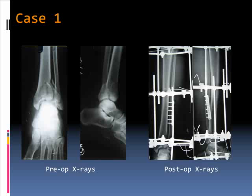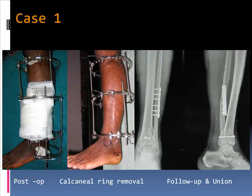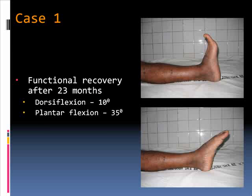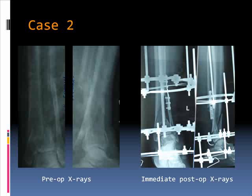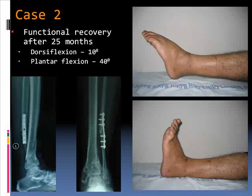Four of them were compound fractures. One case was a type C3 fracture that came to us at 13 days; we treated it with the same method. Post-operative X-rays after calcaneum ring removal showed good alignment, and the final follow-up X-ray confirmed union. The patient had very good function at 23 months. A second type C3 case treated similarly showed good dorsiflexion and union at 25 months follow-up.